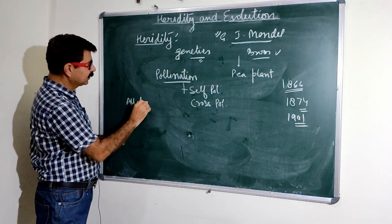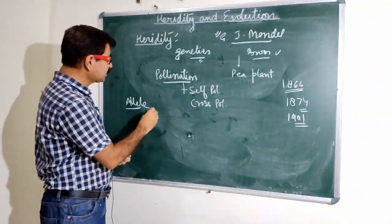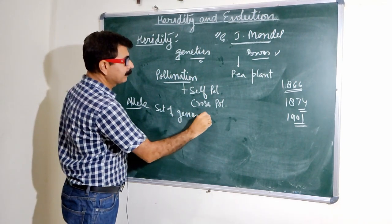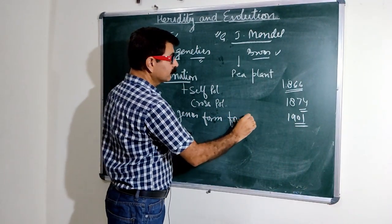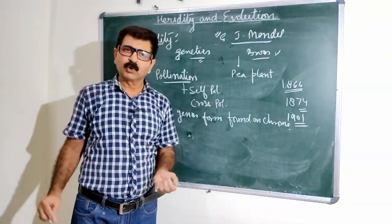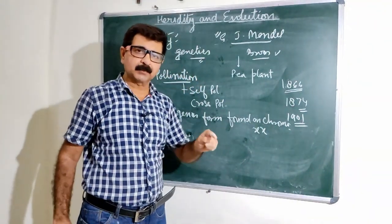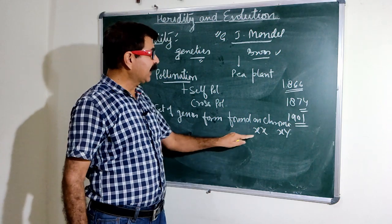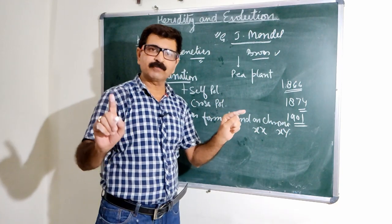The next term is allele — it is a set of genes found on chromosomes. Normally we represent them as X and Y. As you may know from the previous chapter, males can be represented by XY and females by XX. So these are alleles — a set of genes found on chromosomes.